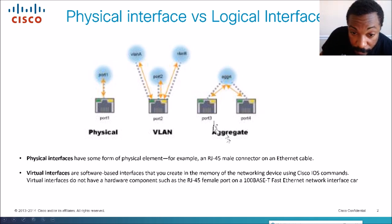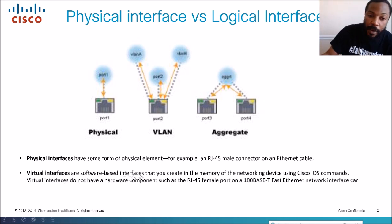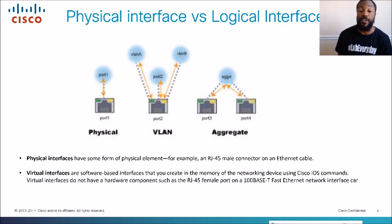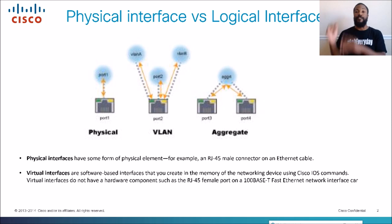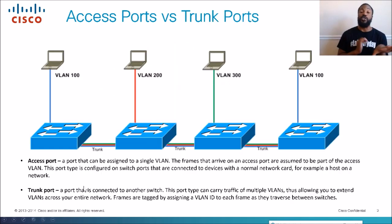In this case we've got two physical interfaces combined to be one logical interface. Virtual or logical interfaces are software-based interfaces created in the memory of a networking device using Cisco IOS commands. They do not have a hardware component, but they can be associated with hardware. Loopback 1, loopback 2, loopback 3 — they're virtual, you can't touch them, but you can assign IP addresses, shut them down, and turn them back on just like a real port.